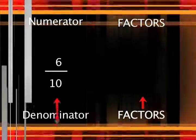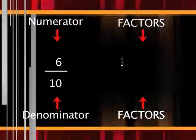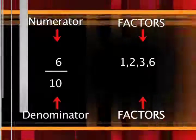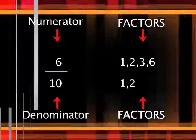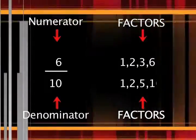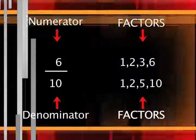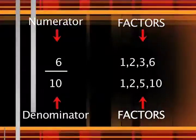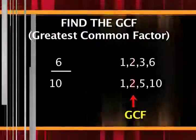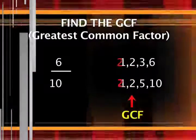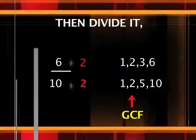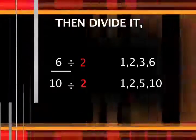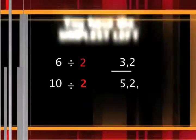List the factors of the numerator. What? List the factors of the denominator. Find the GCF. Then divide it and you have the simplest form.